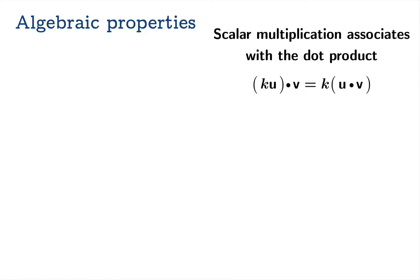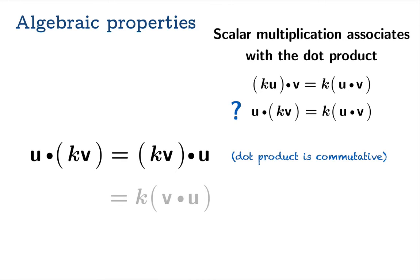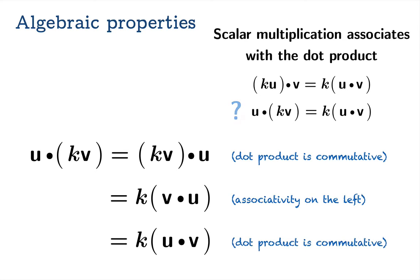As with the distributive property, we can ask whether this associates in the other spot as well — is u dot kv the same as k times (u dot v)? The answer is certainly yes. u dot kv equals kv dot u by commutativity, then we apply the associativity property on the left side, and apply commutativity again to get k times (u dot v). So you can associate the scalar multiplication with either the left or right spot within the dot product.